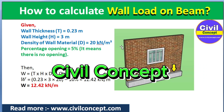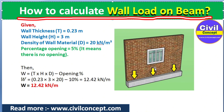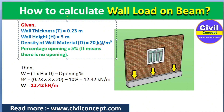Hello guys, welcome to Civil Concept. In this video, I will show you how to calculate wall load on the beam. The given data are: wall thickness is 0.23 meter, that is 230 mm. You can take it according to your requirement — for example, a 5-inch wall or 115 mm wall. The height of the wall I am taking is 3 meters.